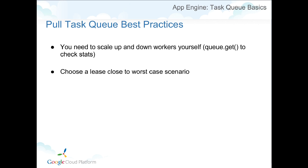For pull queue best practices: since tasks aren't automatically triggered for your instances, you have to determine how quickly you want to spin workers up to pull leases — it's something you control yourself. You should also choose a lease time close to the worst-case scenario. Otherwise, you run into a situation where a task is still being worked on and the lease expires, and a different worker pulls that task and starts executing the same request.